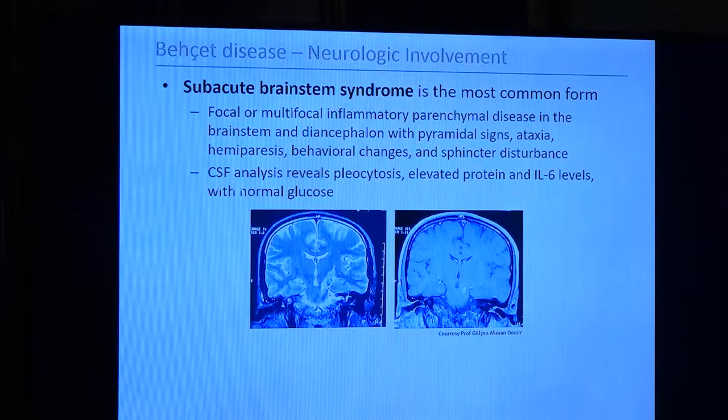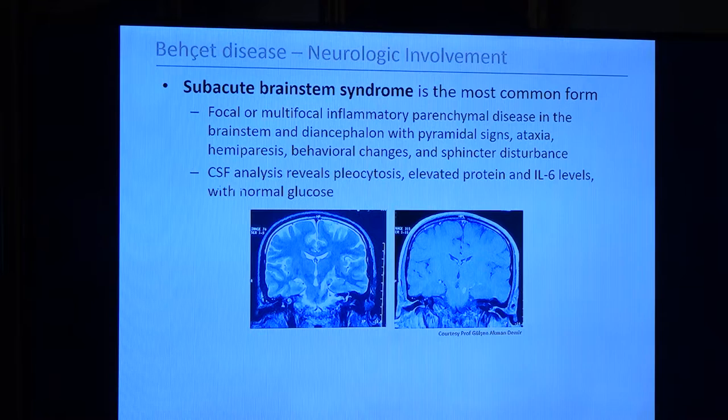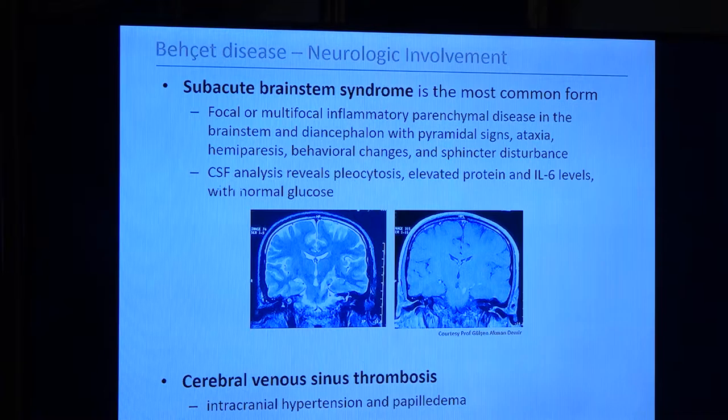The third distinctive feature is neurologic involvement. It typically causes subacute brainstem syndrome with focal or multifocal inflammatory lesions mainly affecting the brainstem and diencephalon, causing pyramidal signs, ataxia, and hemiparesis. When you investigate CSF, you can see pleocytosis, elevated protein levels, and IL-6. Another group of patients may develop dural sinus thrombosis, which is a milder form, does respond to treatment very well, and is different from parenchymal disease patients.